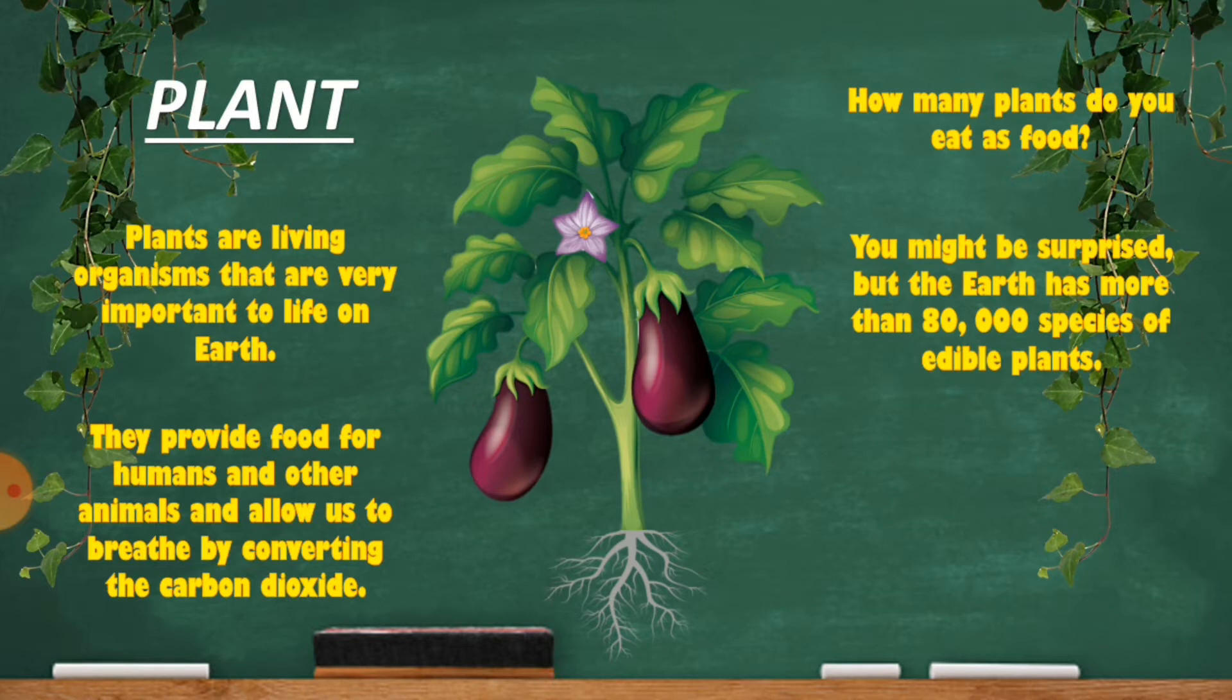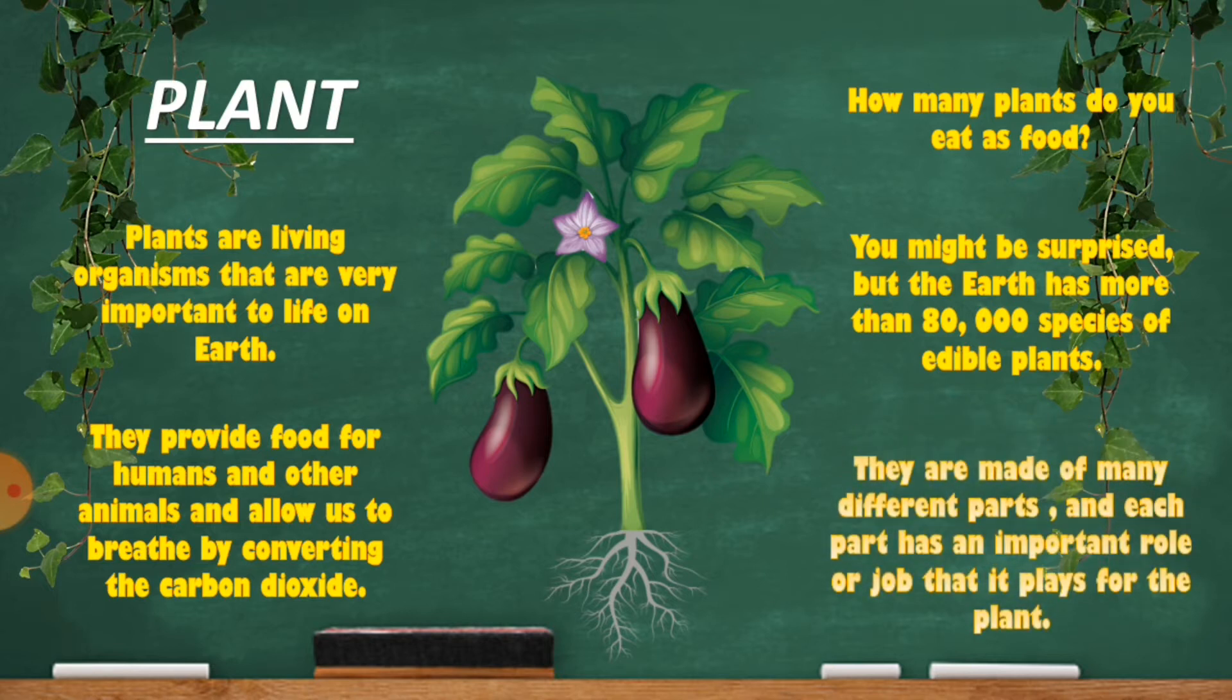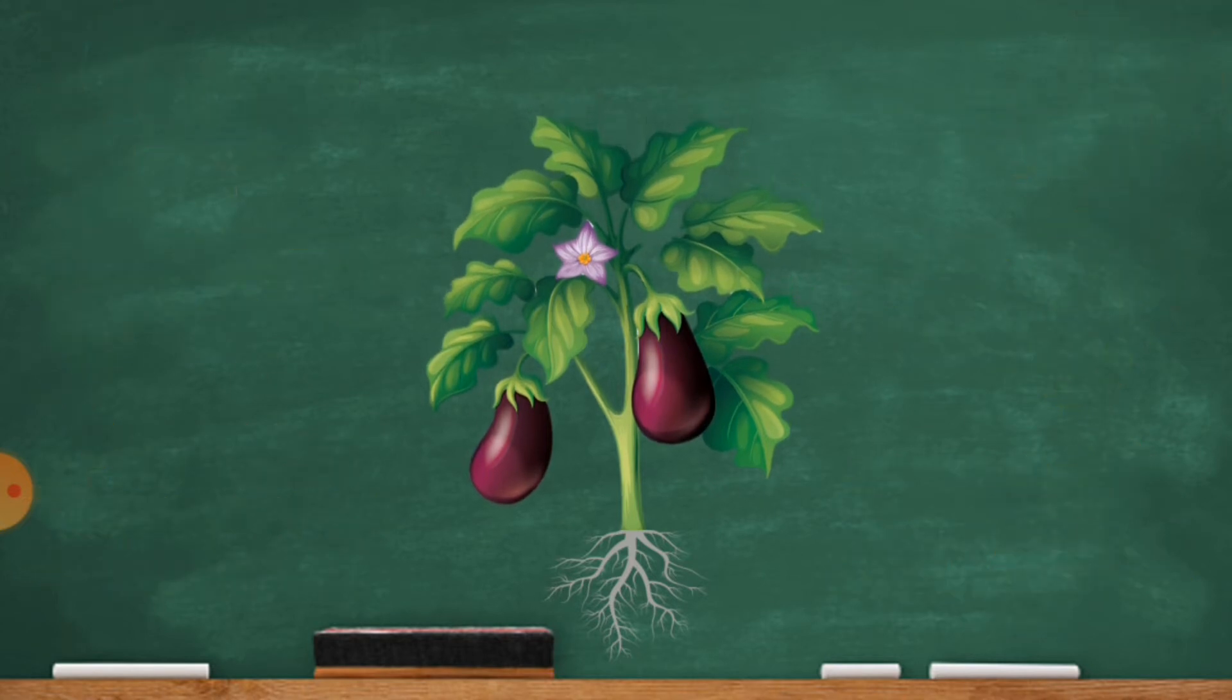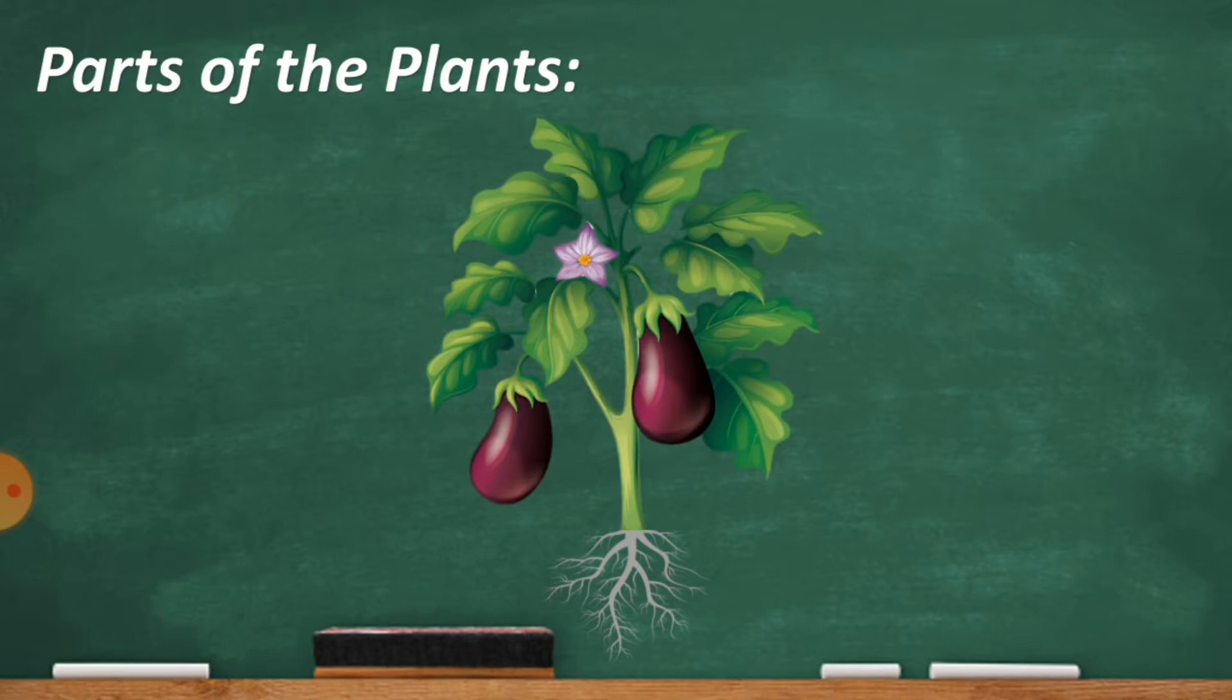You might be surprised but the earth has more than 80,000 species of edible plants. Plants are made of many different parts and each part has an important role or job that it plays for the plant.